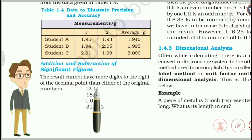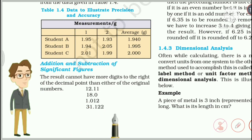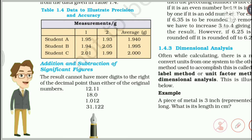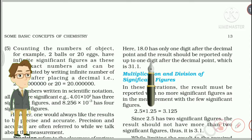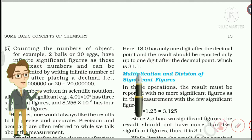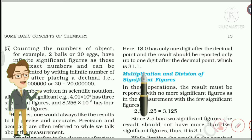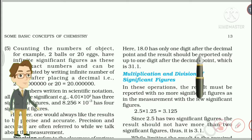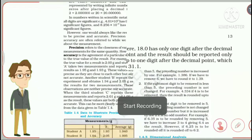The result cannot have more digits to the right of the decimal point than either of the original numbers. For example, 31.122 has three digits after the decimal point. But here one number is given as 18.0, which has only one digit after the decimal point — the least among all given numbers. So your answer should also have only one digit after the decimal point, which gives 31.1.